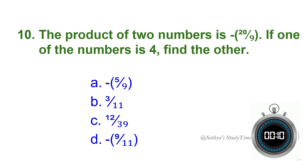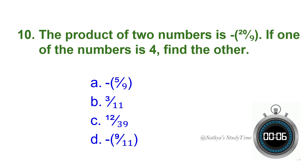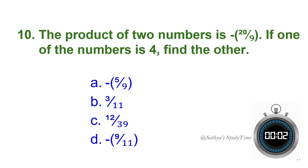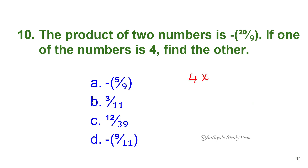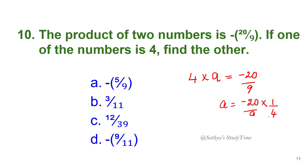Tenth question: The product of two numbers is minus 20/9. If one of the numbers is 4, find the other. Your time starts now. Let the other number be a: 4 × a = minus 20/9, so a = minus 20/9 × 1/4 = minus 5/9. The answer is minus 5/9.